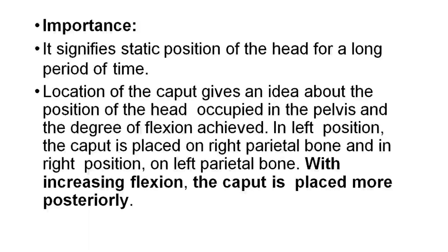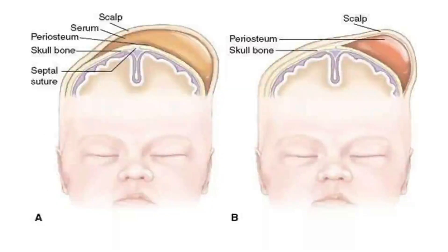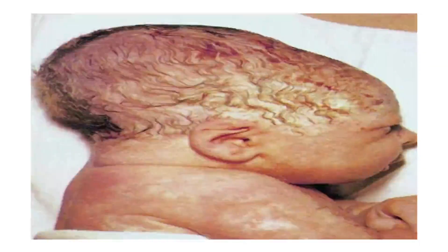Importance: It signifies the static position of the head for a long period of time. Location of caput gives an idea about the position of the head occupied in the pelvis and degree of flexion achieved. In the left occiput position, the caput is placed on the right parietal bone, and in the right occiput position, on the left parietal bone. With increasing flexion, caput is placed more posteriorly. This is a picture of caput succedaneum — how the baby looks after delivery.